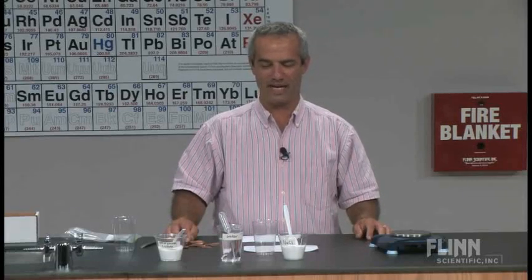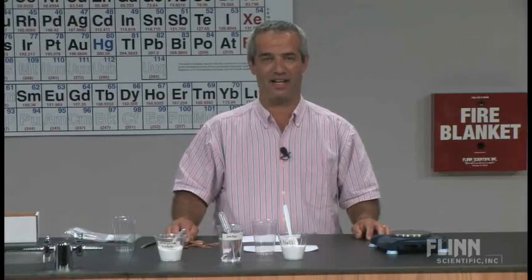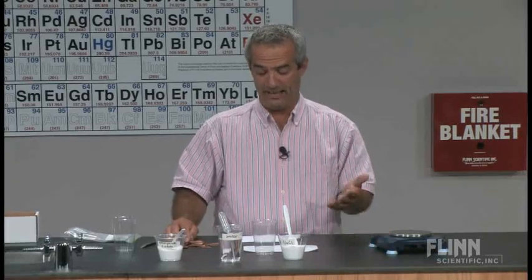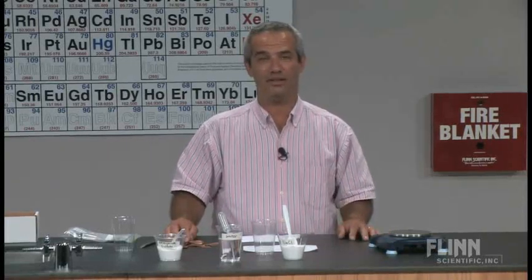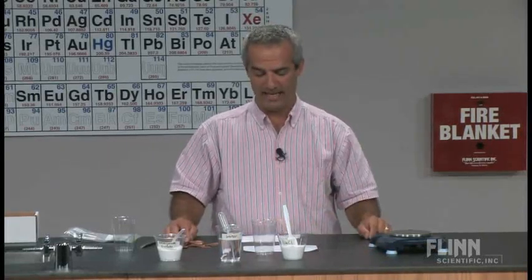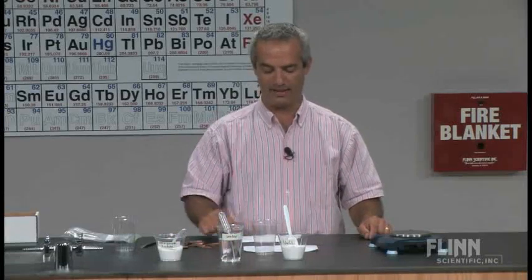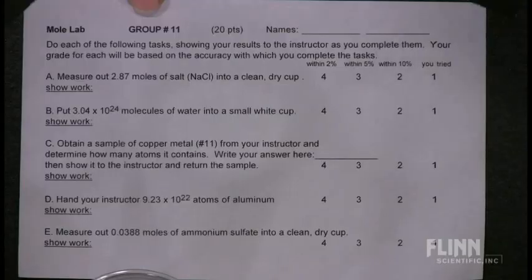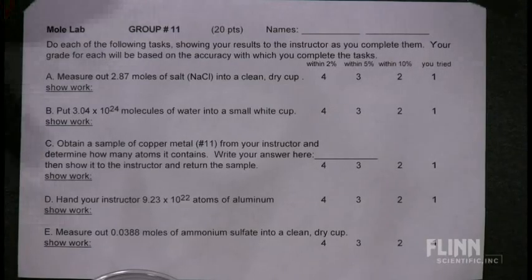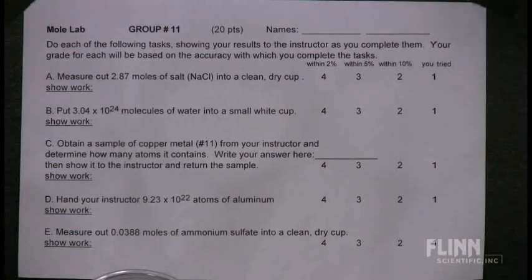They're not really determining any value or identifying a known. Instead, each group is given five tasks to complete, and I have an example here set up. Group number 11 — they each have different group numbers and slightly different tasks, so they can't just take the answer from the person next to them.